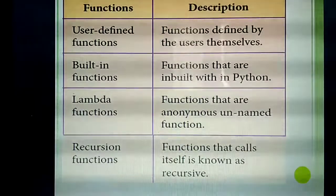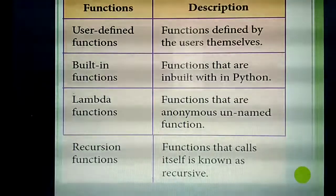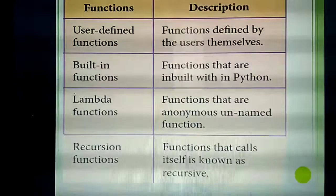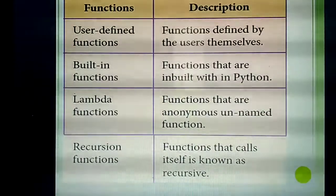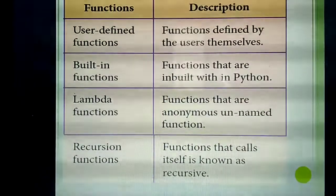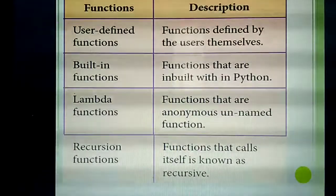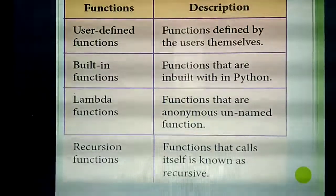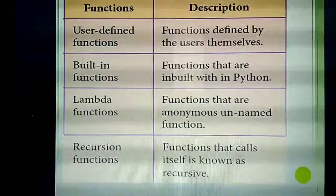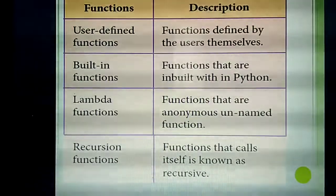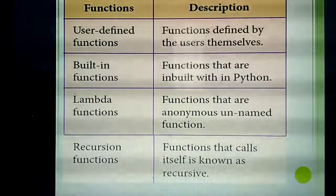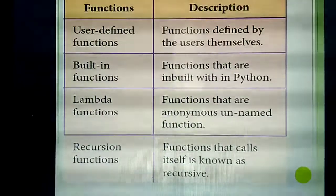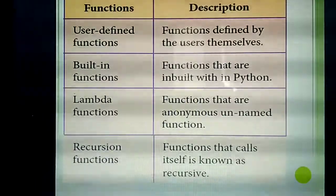In the same example — struct student — that function is defined by whom? If you are writing the program, you are the user. You are defining that function 'struct student'. That function is defined by the user — so we call it a user-defined function.